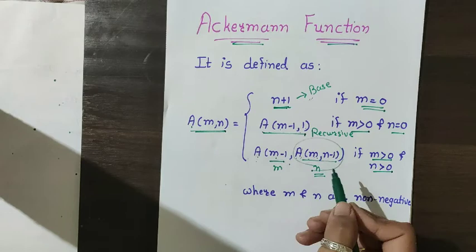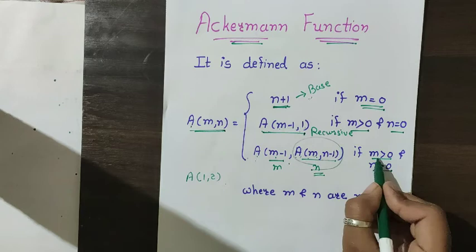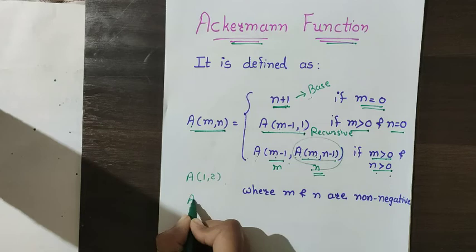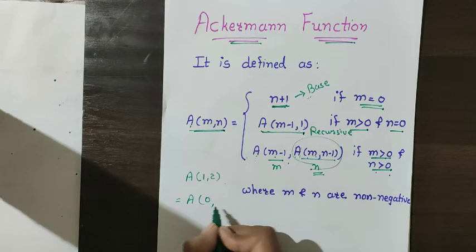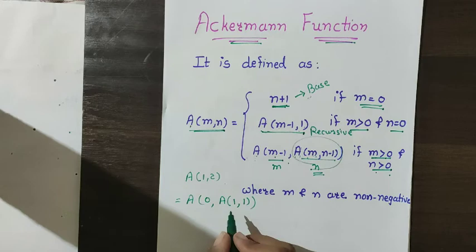Let's take an example: find a(1,2). Since m and n are both greater than 0, a(1,2) equals a(m minus 1, a(m, n minus 1)), which is a(0, a(1, 1)). So I need to find a(1,1) first.